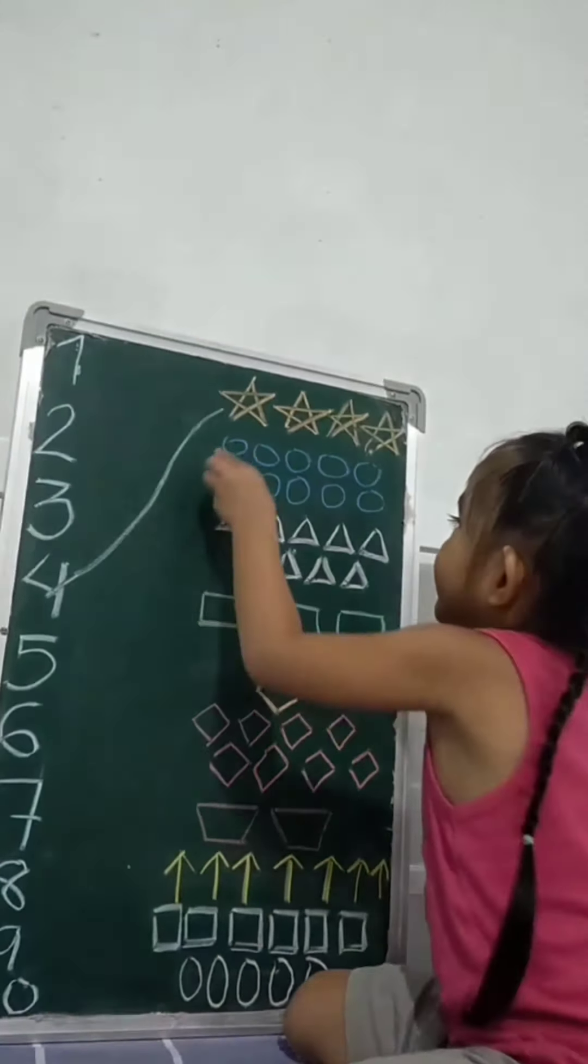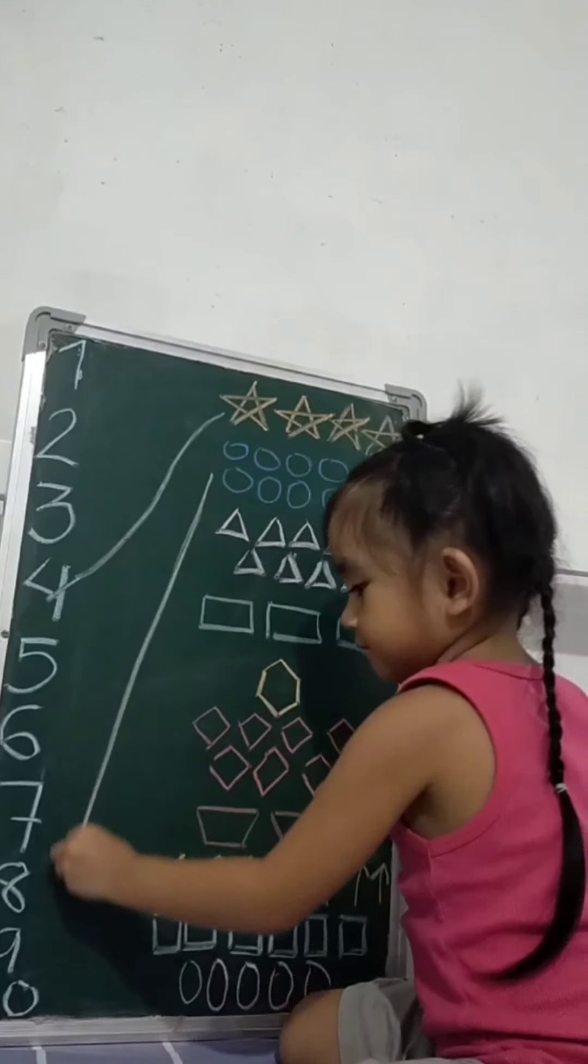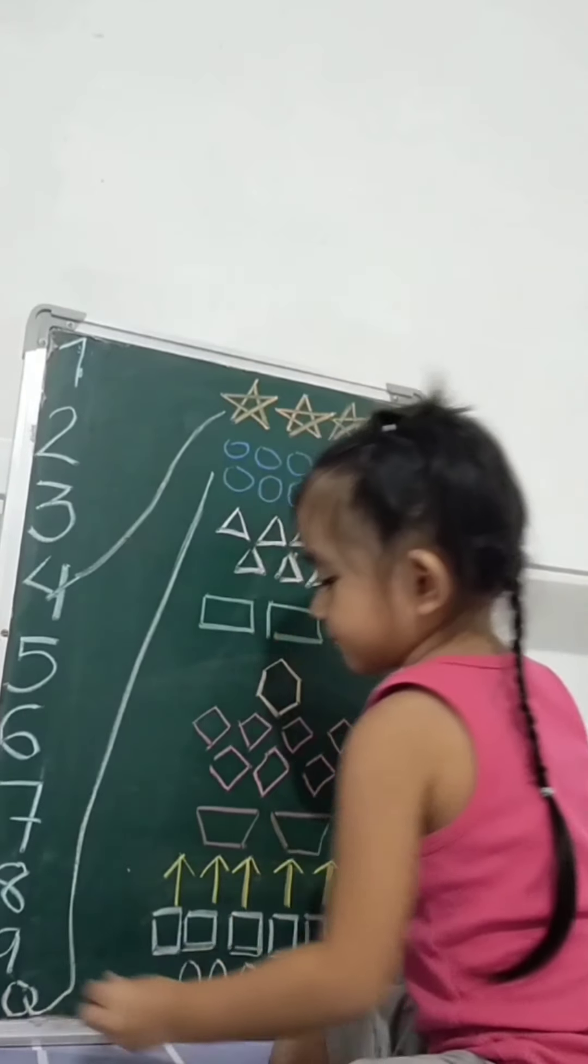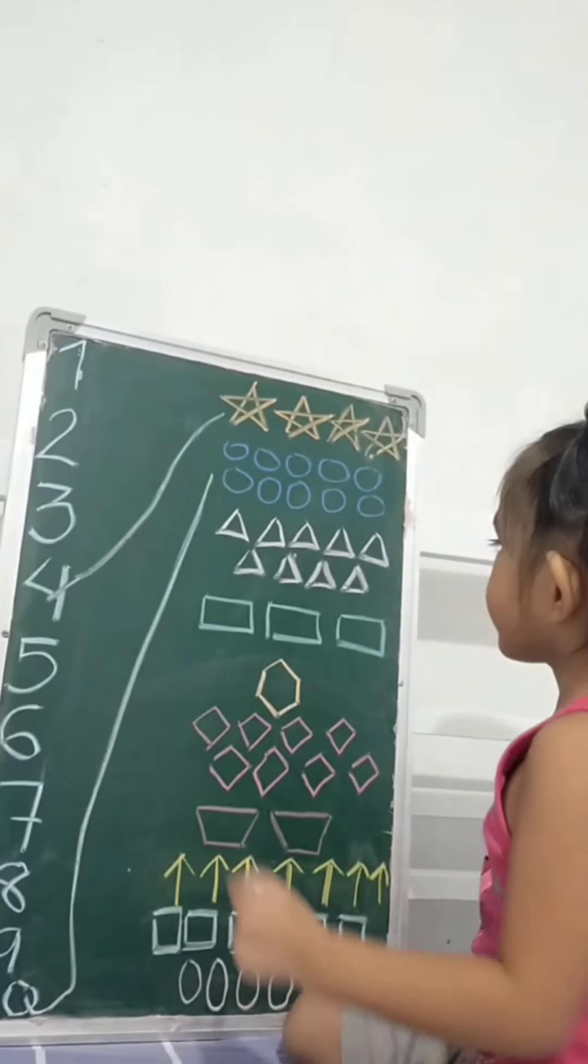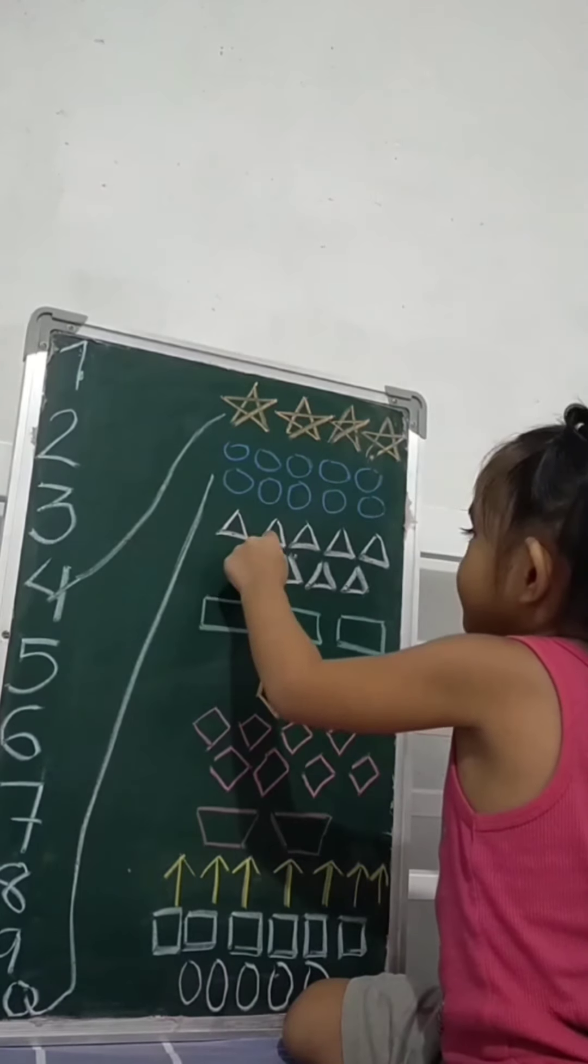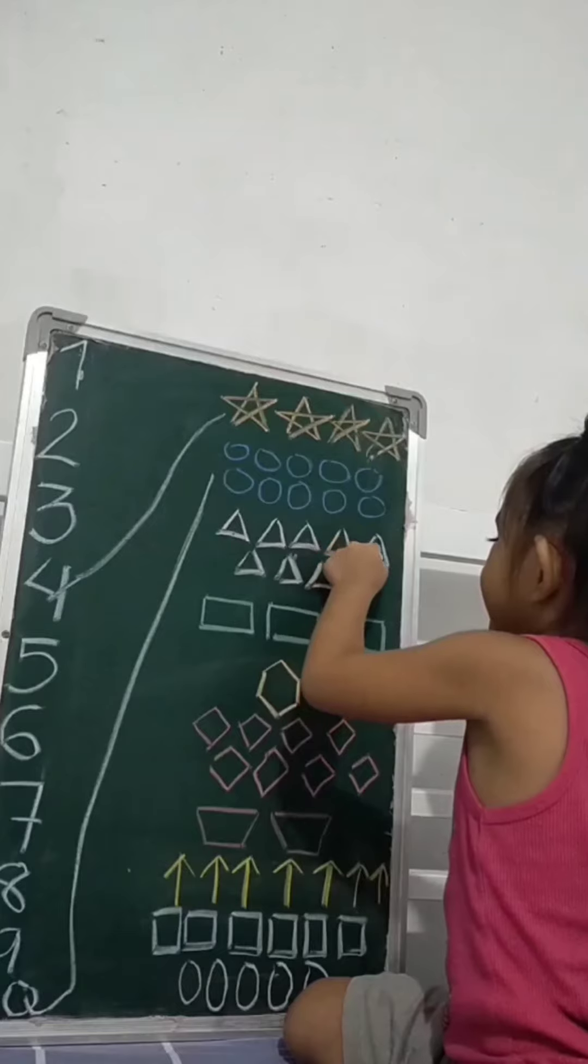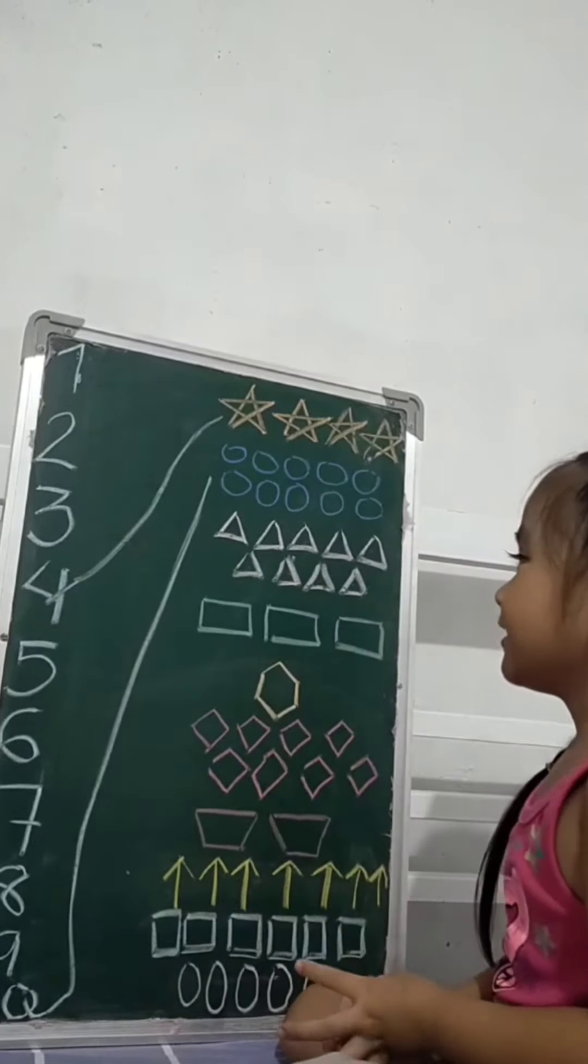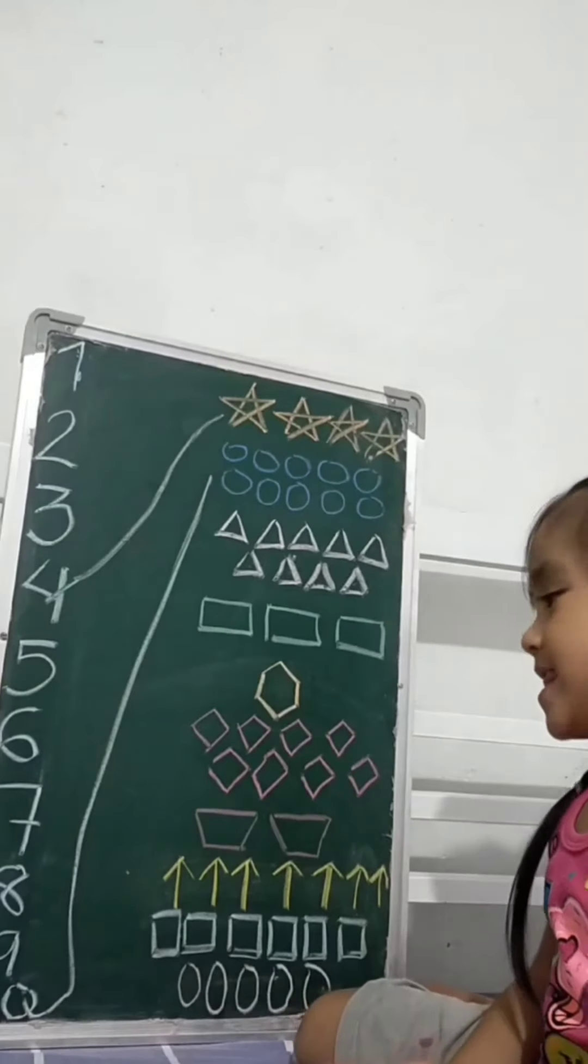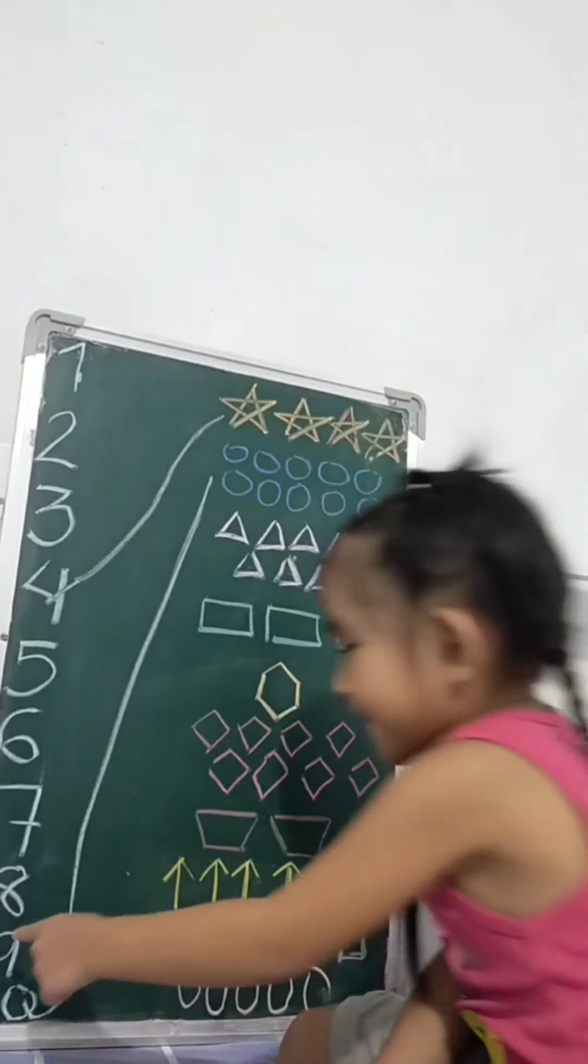Yes, okay. Match. Very good. Oh, triangle! How many triangles? One, two, three, four, five, six, seven, eight, nine. Nine, nine, nine. Okay, where's number nine?